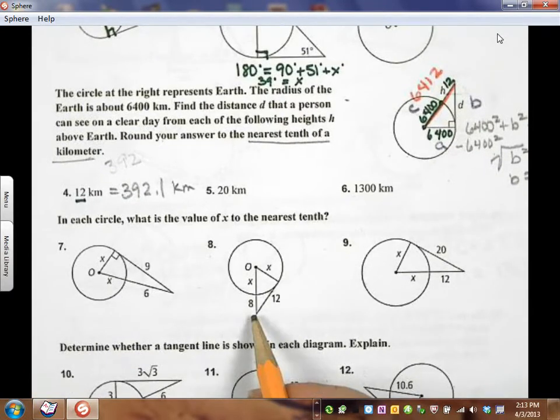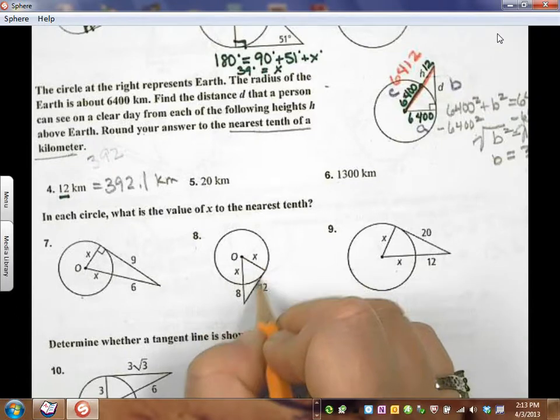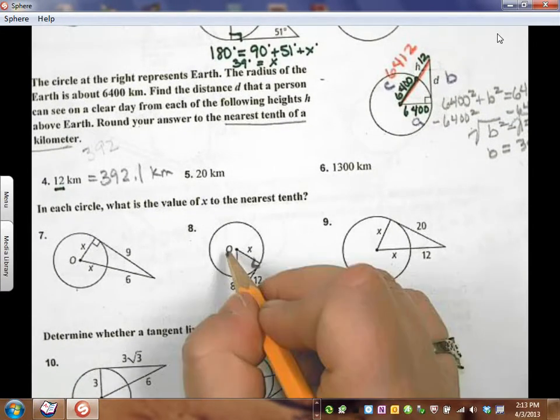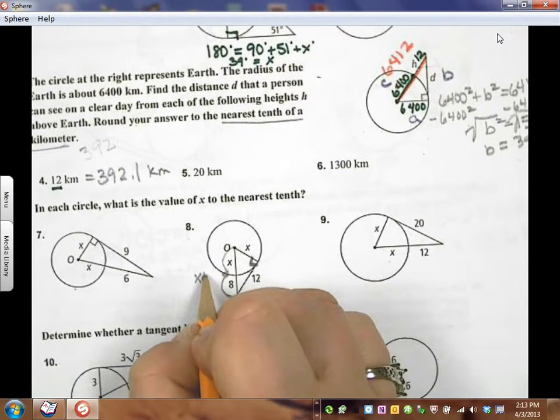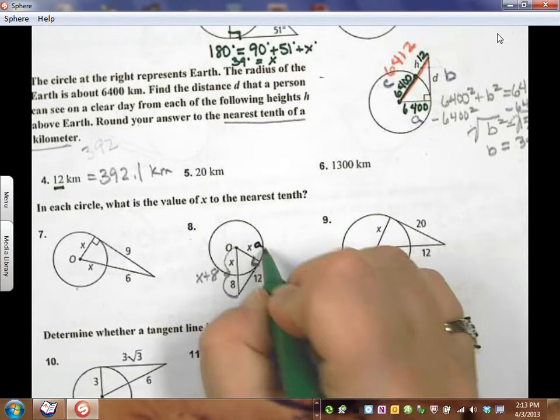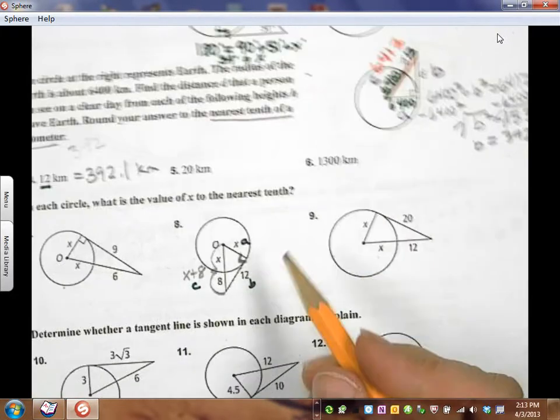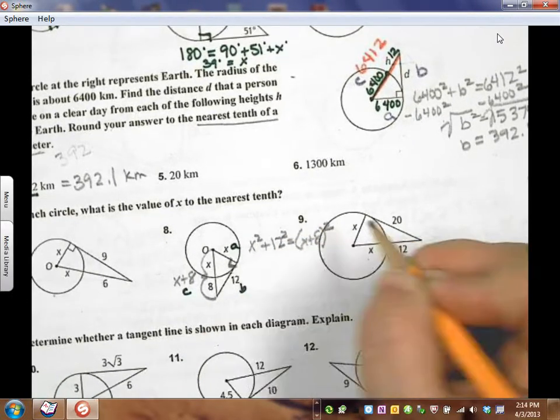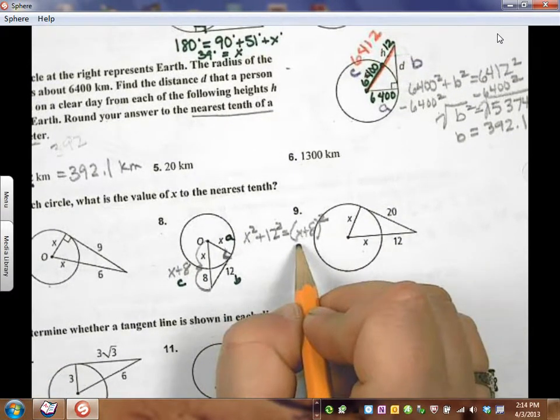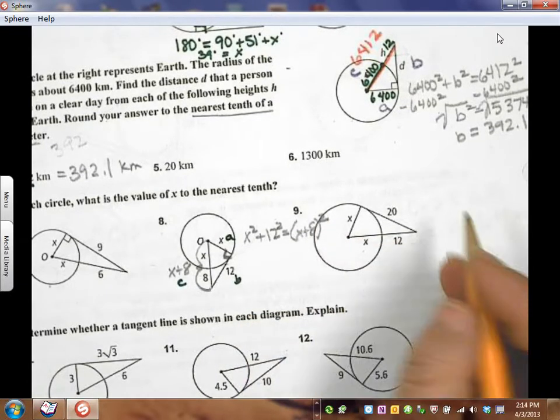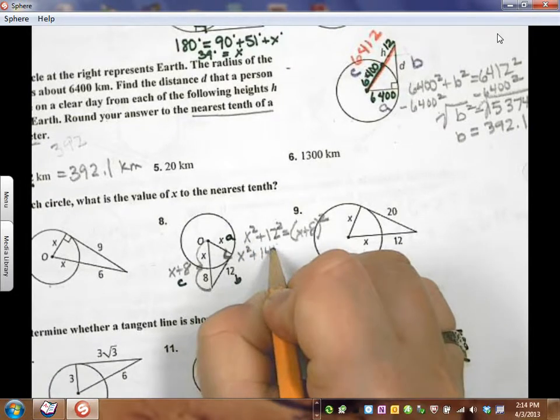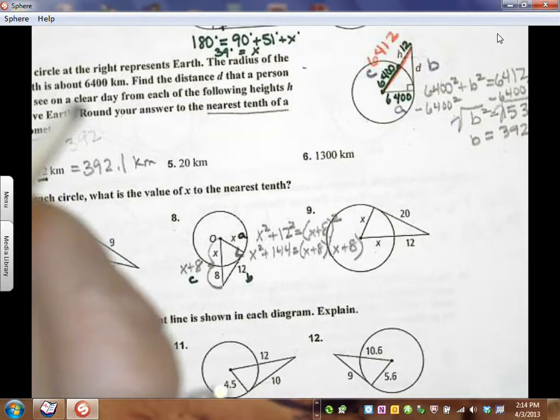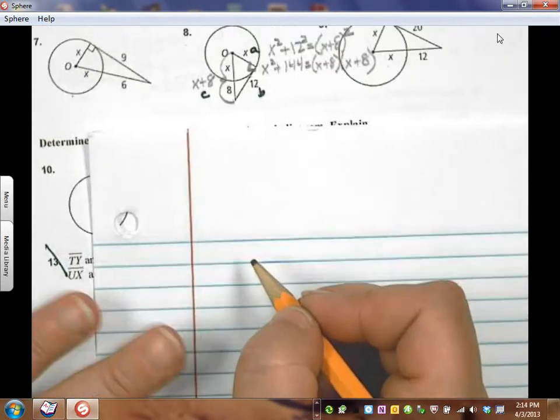Let's look here at number 8. It's a lot like 7 and a lot like 9. Once again, I've got a tangent bumping into a radius. So that's going to be a right angle. This is all A squared plus B squared equals C squared. This line, add it all together, is how big, though? X plus 8. And that's going to be, here's A, B, and C. So I'm going to have X squared plus 12 squared equals X plus 8 squared.